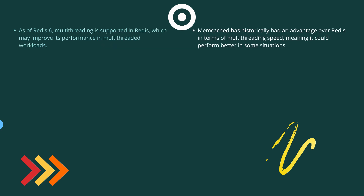Historically, Memcache has had an advantage over Redis in terms of multi-threading speed, which means it could perform better in some situations. However, as of Redis 6, multi-threading is supported in Redis as well.